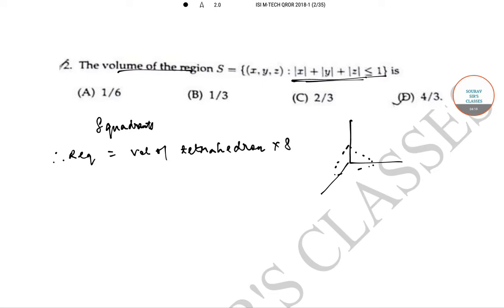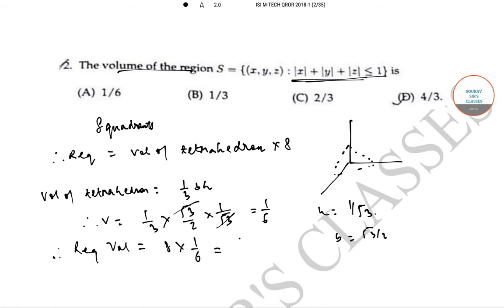The volume of a tetrahedron is (1/3) × base × height. Working through the calculation, the volume of one tetrahedron equals 1/6. Therefore, the required volume is 8 × (1/6) = 4/3. So the correct option is option D.